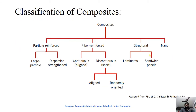Classification of composites can be done broadly in two ways: by the type of reinforcement present, and by the type of matrix used. Based on reinforcement type, composites are divided into four categories: particle reinforced, fiber reinforced, structural composites, and nano composites. Particle reinforced composites are further divided into large particle and dispersion strengthened composites.